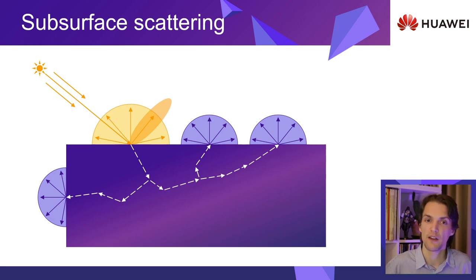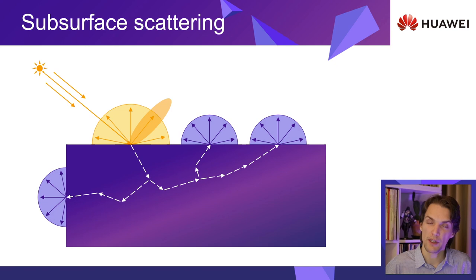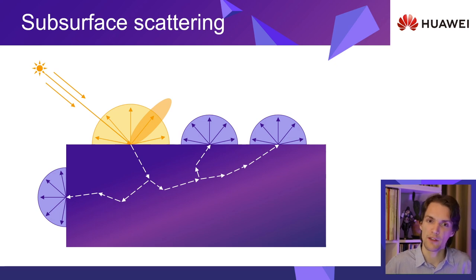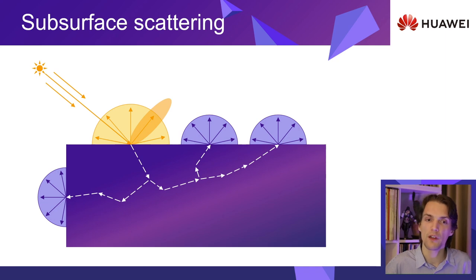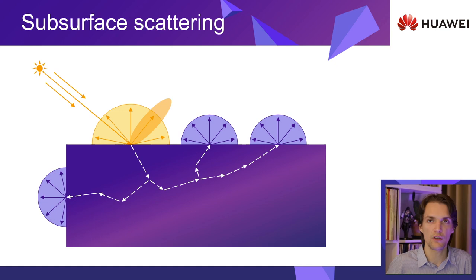If you remember the BRDFs we discussed at the start, they only accounted for the light reflecting on the surface. But what of the scattering we just discussed? Introducing the BSSRDF — the bi-directional scattering surface reflectance distribution function. With it, we now have a way to describe the light entering the surface, scattering under it, and exiting at another point.